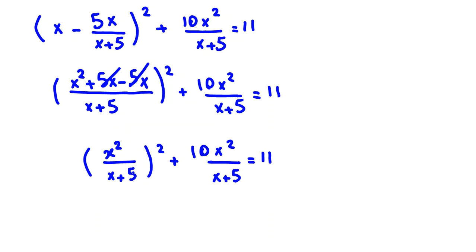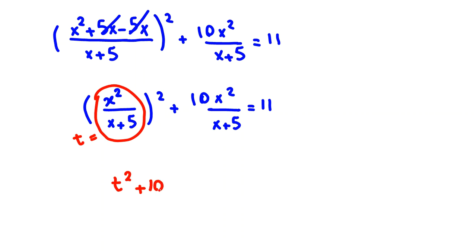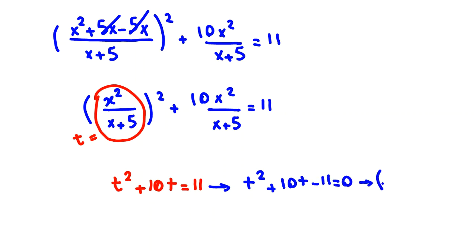We see the same term x squared over (x plus 5) appearing. So I let t equal x squared over (x plus 5). The equation becomes t squared plus 10t equal to 11. Taking everything to one side: t squared plus 10t minus 11 equal to zero. This can be factorized as (t plus 11)(t minus 1) equals zero.